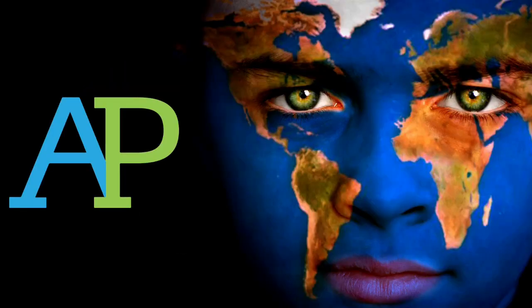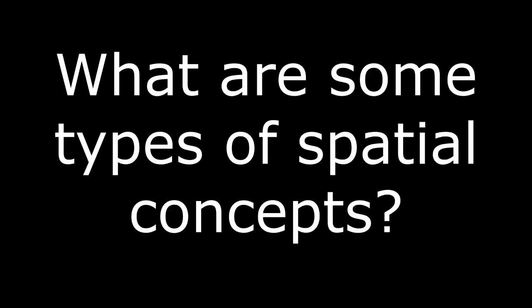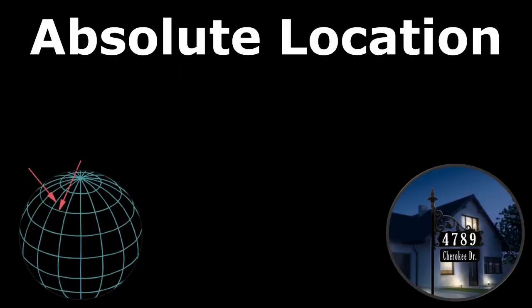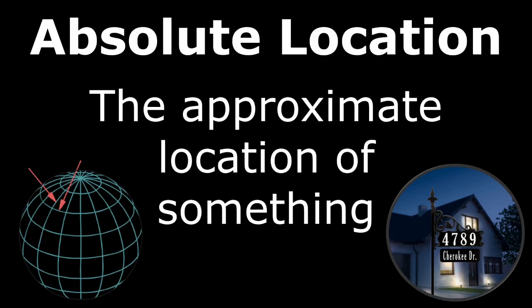Welcome to an AP Human Geography video on spatial concepts. Some examples of spatial concepts include absolute location, like coordinates using latitude and longitude, and a place's address.